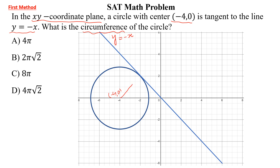So we need to calculate the radius of this circle, then we can find the circumference. We know that the formula to calculate the distance between the line and the point is: r = (ax₁ + by₁ + c) divided by the square root of (a² + b²).